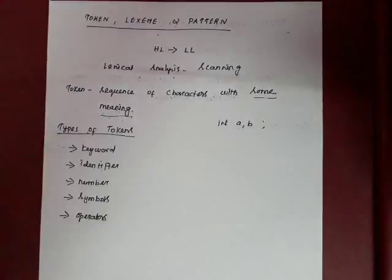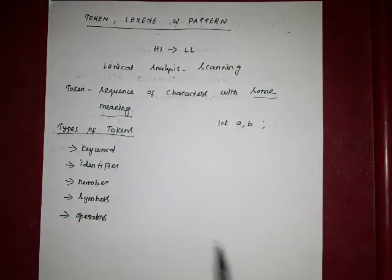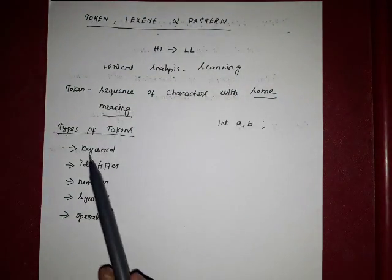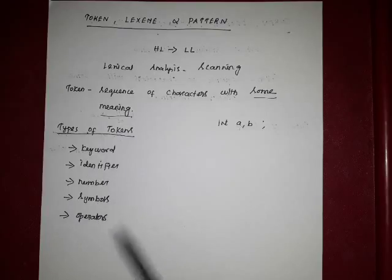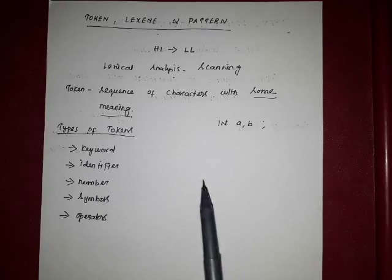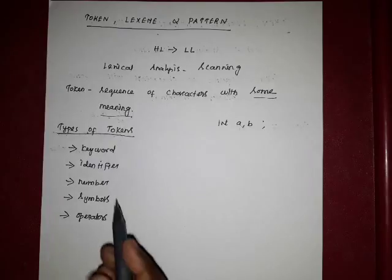Now we will see the types of tokens. The types of tokens are: keyword, identifier, number or digit, symbols, and operators. These are the tokens we have to identify while reading from left to right using lexical analysis.